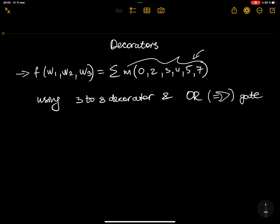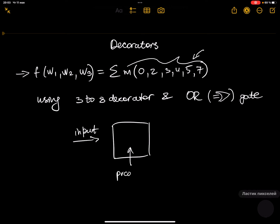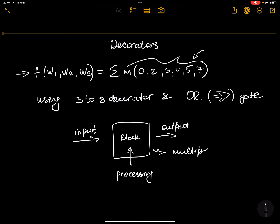As you know, decoders and multiplexers function in almost the same way — they receive inputs, process those inputs, and then you get an output. This is a combinational block, and a decoder is an element of this block type. This block can be a multiplexer, a decoder, and so on. This is really fundamental to understand.